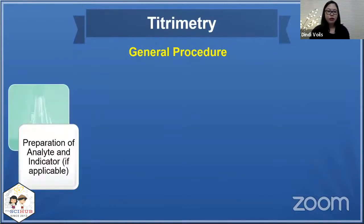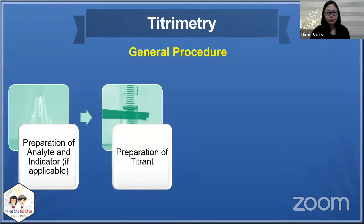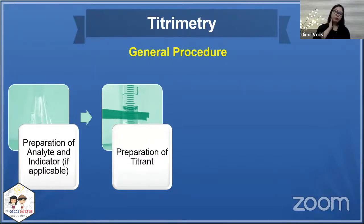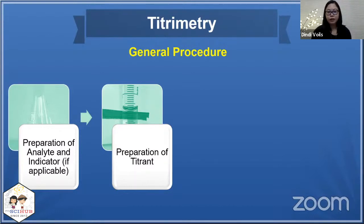For the general procedure, first prepare the analyte and add the indicator if applicable, because some titrations don't need indicators — the titrant is self-indicating. Next, prepare your titrant by loading the solution into the burette and making sure the meniscus is correctly positioned. Part of titrant preparation is standardization, where you determine the actual exact concentration of your titrant for more accurate calculations.